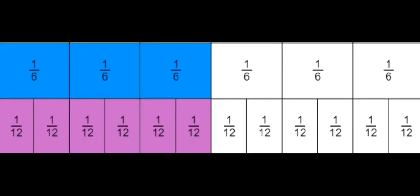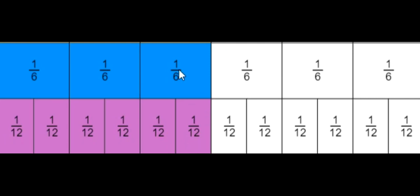We can check that our answer is correct by using a picture. So if we use these fraction bars, 3 out of 6 pieces — so 3 sixths — is in fact equivalent to 6 out of 12 pieces, which would be 6 twelfths. Because if I count here I've got 6 shaded in and there are 3 shaded in here, and they are the exact same amount.